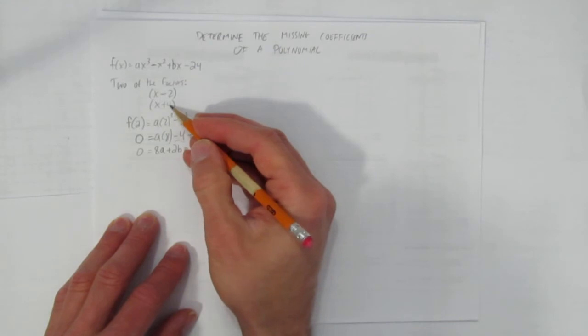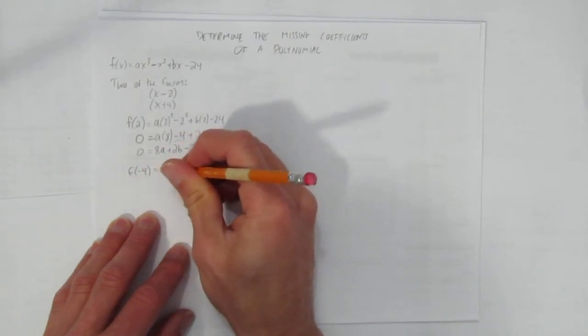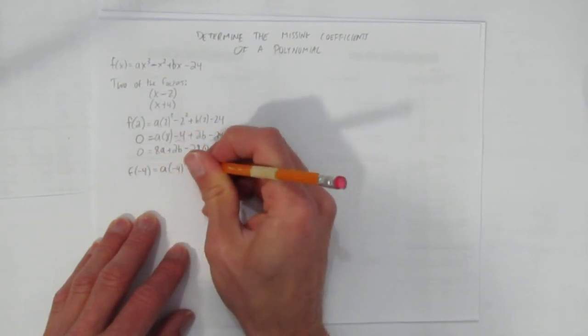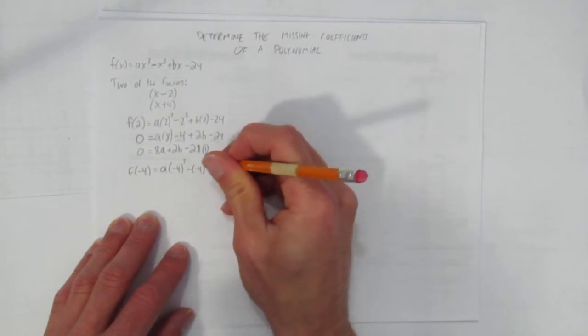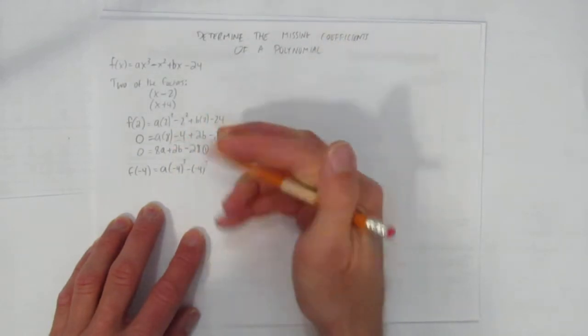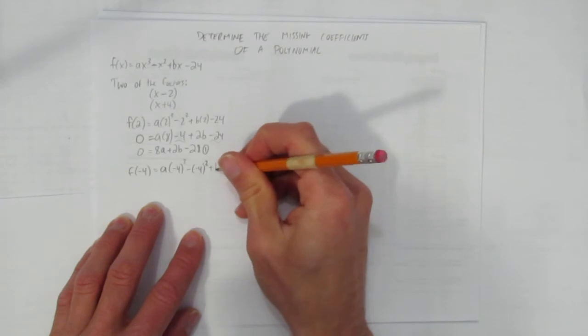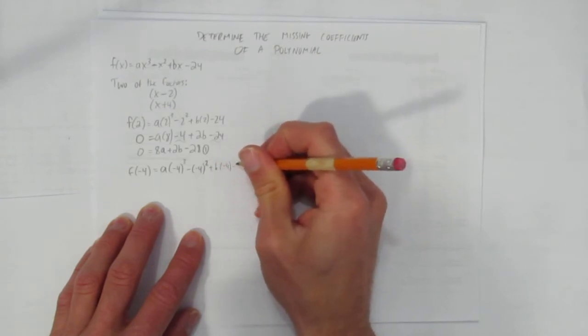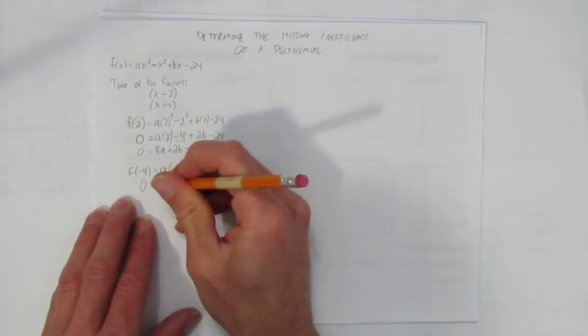Let's do the same with the zero of this factor. The zero of x plus 4 would be negative 4. So we'll sub that in to the equation. We get a times negative 4 cubed minus, make sure to put brackets this time, negative 4 squared, plus b times negative 4 minus 24. And if you sub in the zero, you get a value of 0.